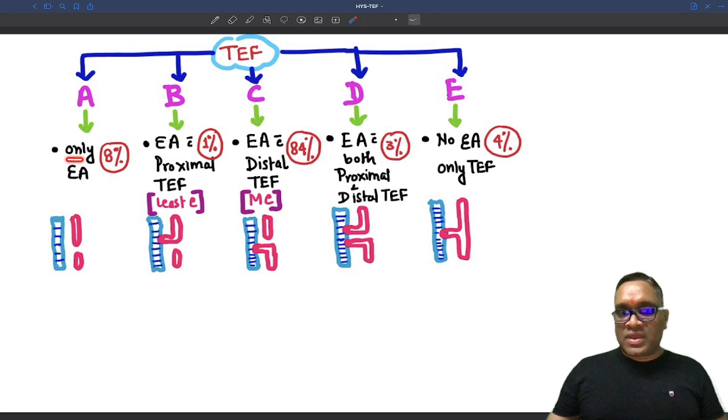So, what is A? A will be having only esophageal atresia. You can see this is the esophageal atresia. So, here you can see there is esophageal atresia, trachea is normal.